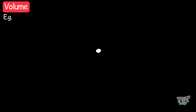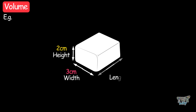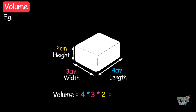Here we have an example. The height of this object is two centimeters, the width is three centimeters, and the length is four centimeters. So its volume will be four multiplied by three multiplied by two, which equals 24 cubic centimeters. This is the way to find the volume of regular shapes.